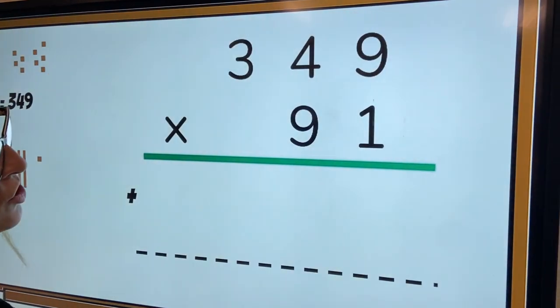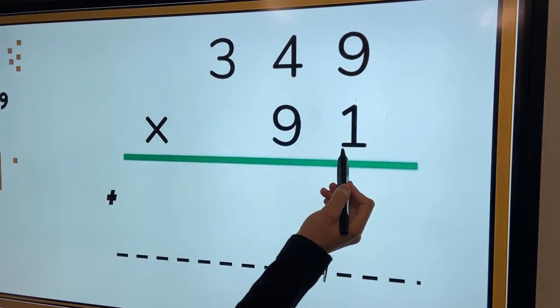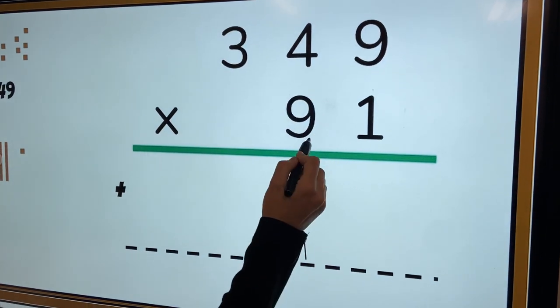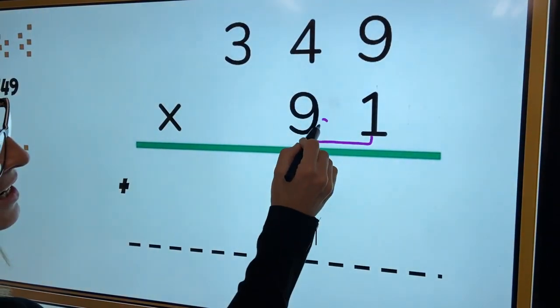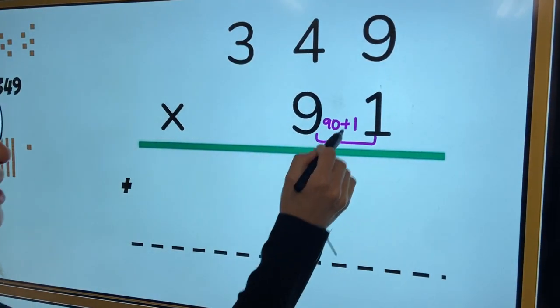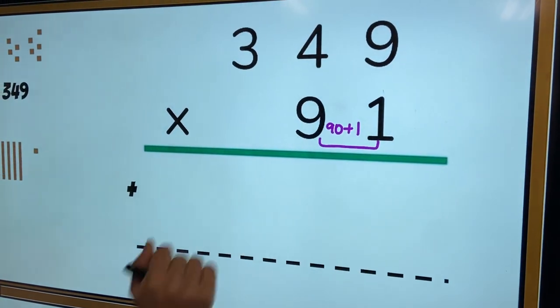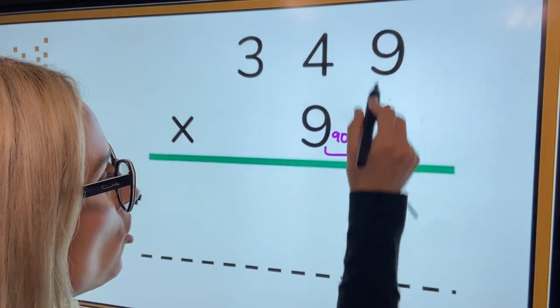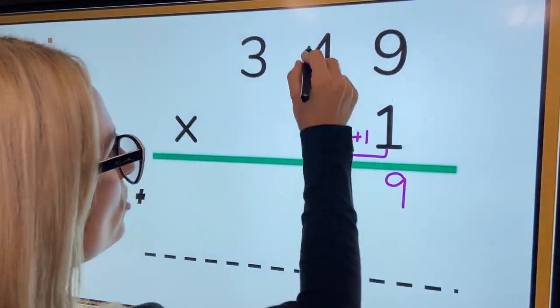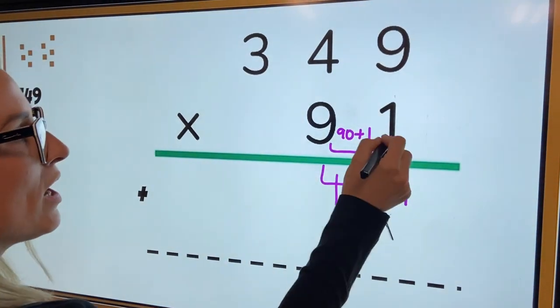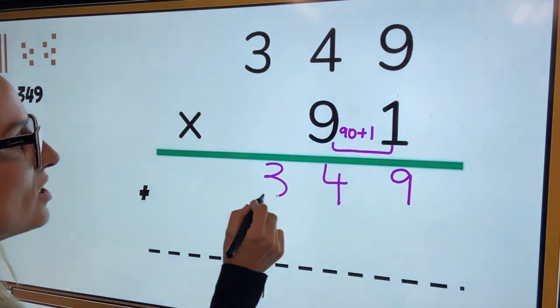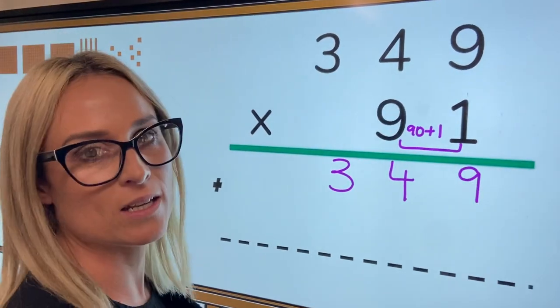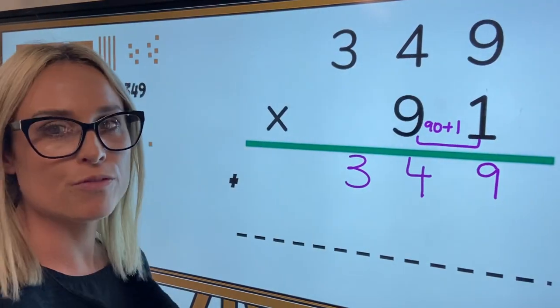So the first thing that we're going to do is we're going to actually multiply the one by 349, because really what this is asking us is 90 plus one. And that little zero there, that's going to come in and save us in a little bit. So we're going to do one times nine, which is nine, one times four, which is four, and one times three, which is three. Now again, we would know that because we know that anything times one is just itself, but we're not finished because this is actually asking us to multiply 90 and one times.